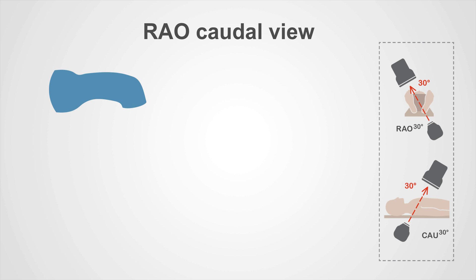When the left coronary artery exits the aorta, it does so via a vessel known as the left main stem. This left main stem is an extremely important artery. It determines the blood flow into the majority of the myocardium, and as such, narrowings or stenoses in this part of the left coronary artery are extremely prognostically and symptomatically important.